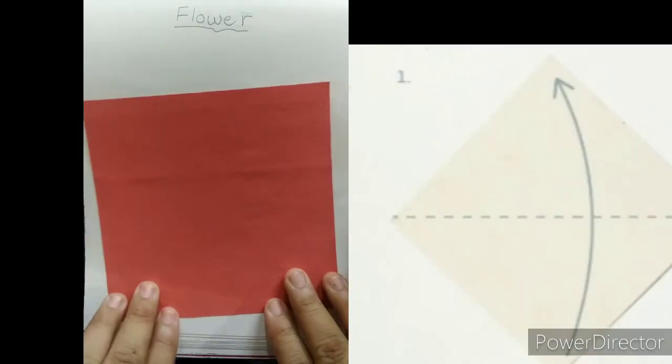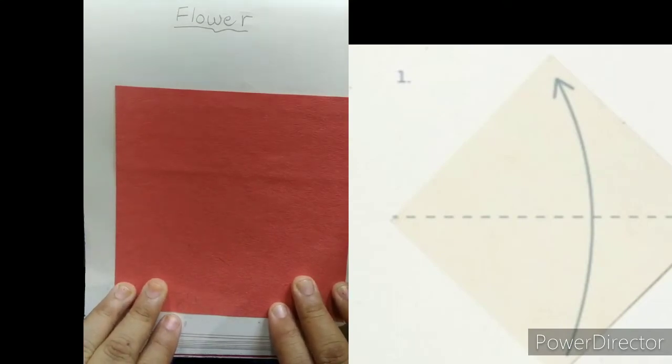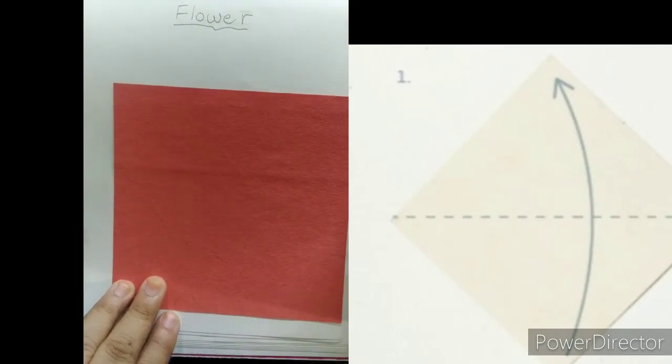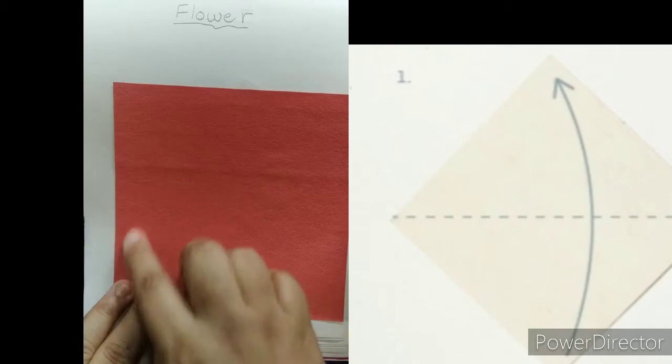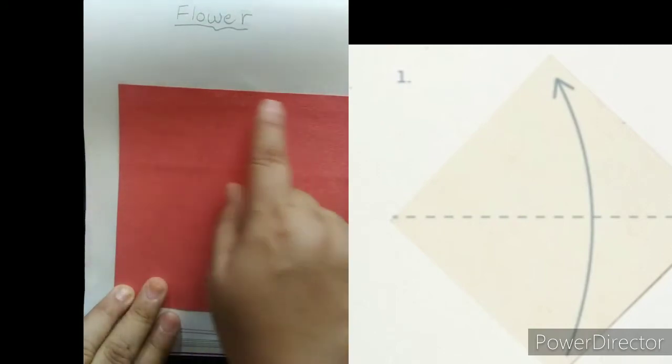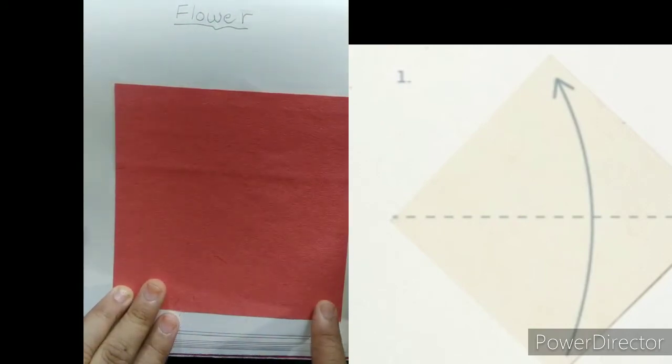So, we are going to start to make a flower. Now, what is the shape? Yes. It is a square shape of a craft paper.